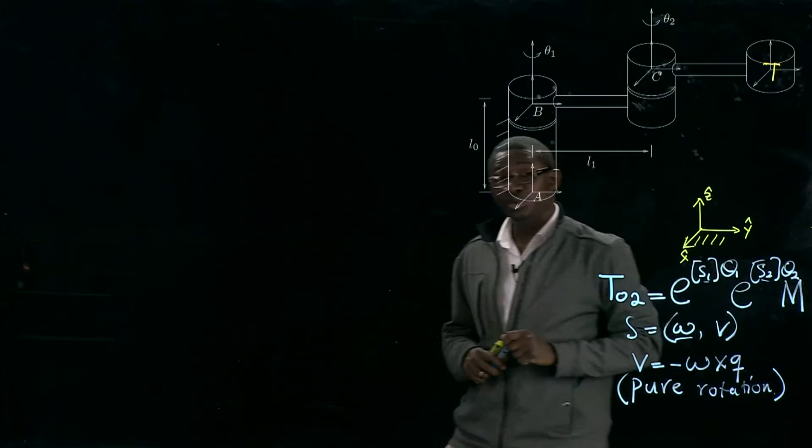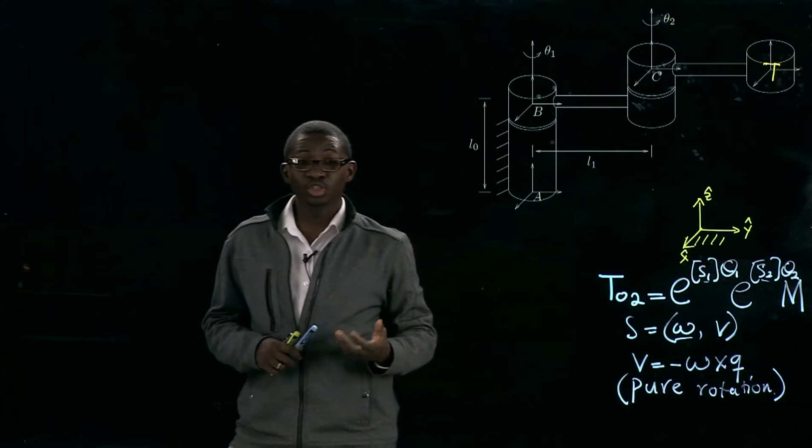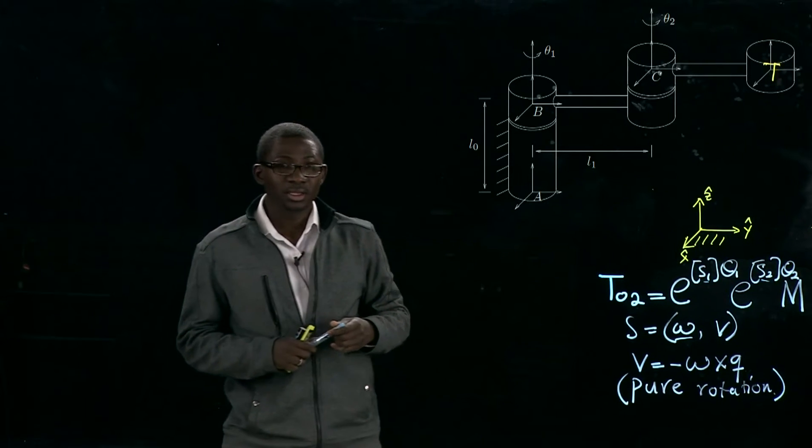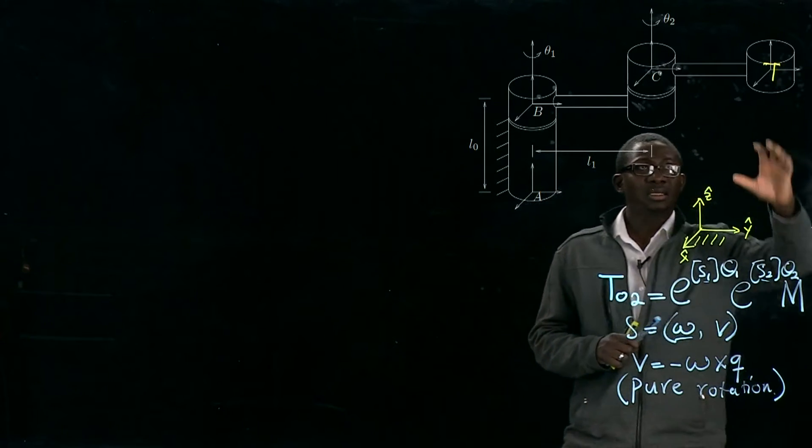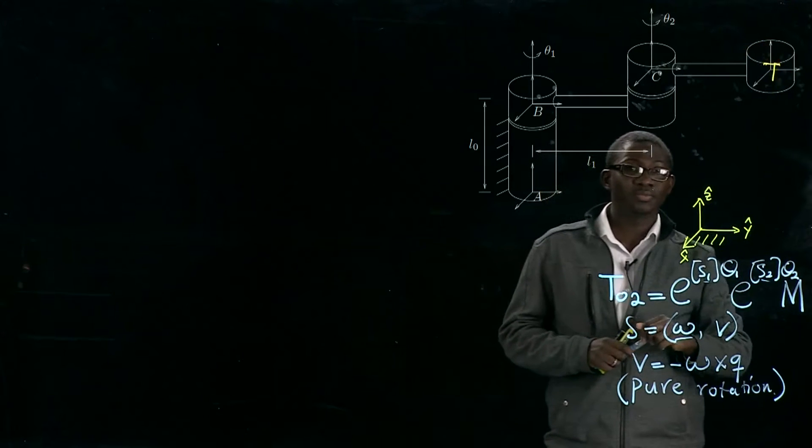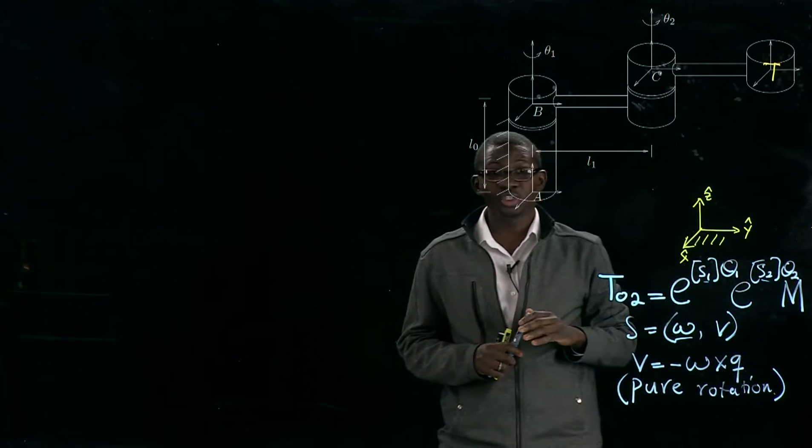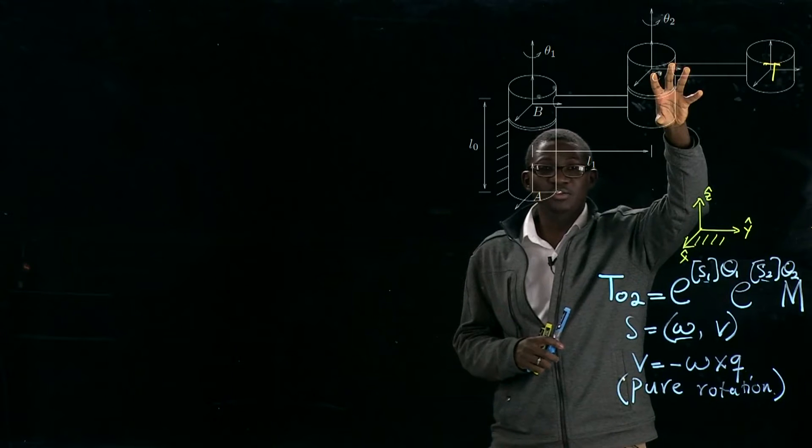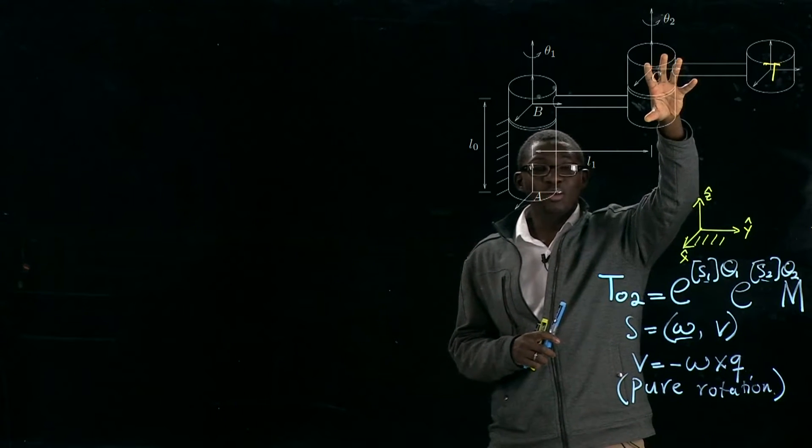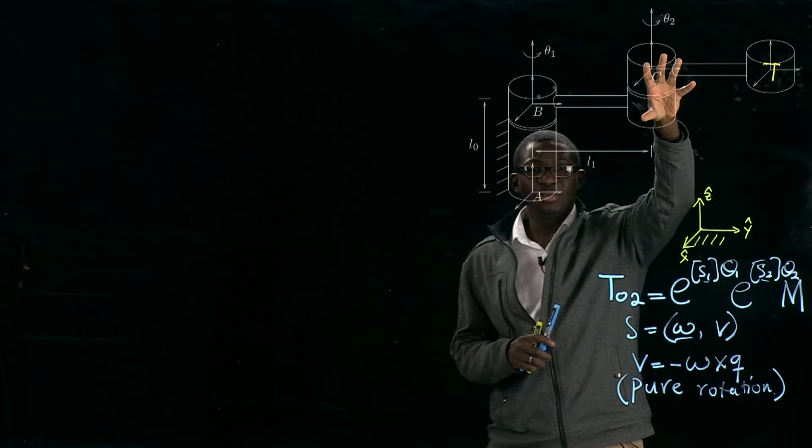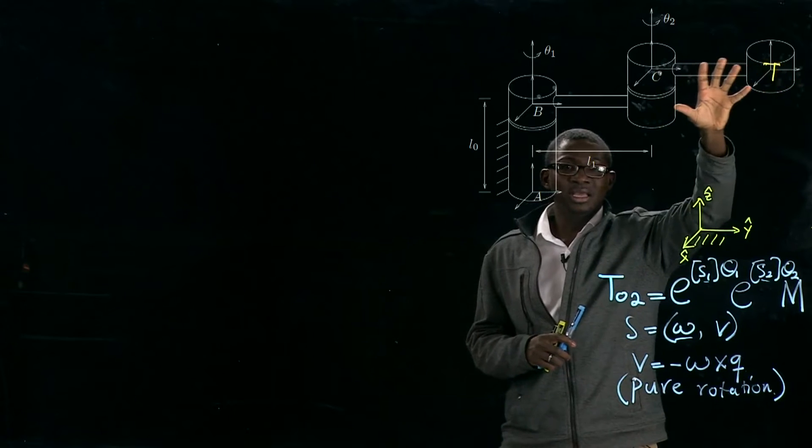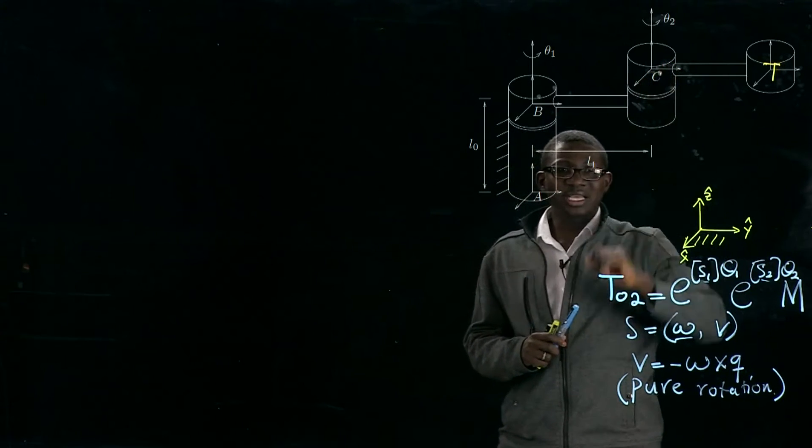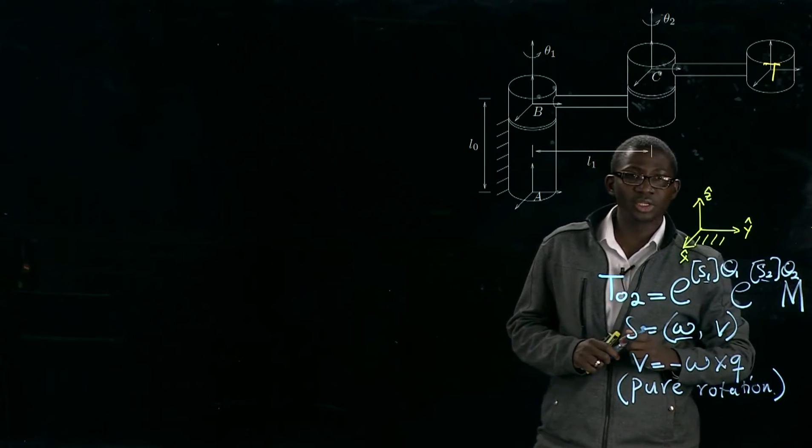And this M happens to be the homogeneous transformation which tells us the location of our end-effector. In this case, since this is our end-effector, and we want to find a configuration of this end-effector with respect to our reference frame, or our space frame, we are going to make our space frame a fixed frame and determine the configuration of our end-effector. And when we fix it, we'll be able to find the location of our end-effector.